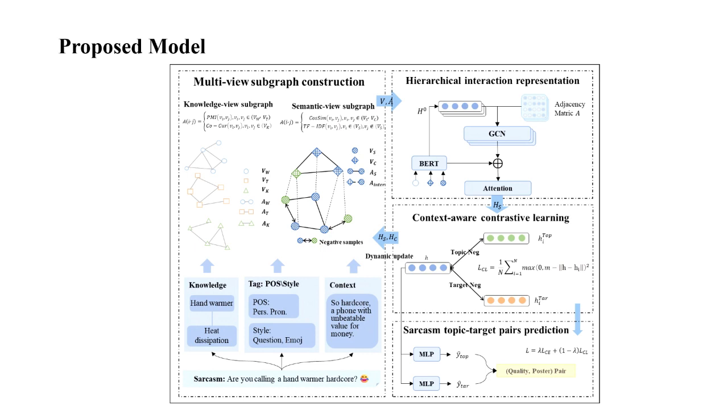To capture the global information of hybrid features, an attention-fused hierarchical aggregation mechanism is adopted to enhance the interaction representation of sarcasm. Then, the model designs a context-aware negative sampling strategy to perform contrastive training on samples of different target-topic pairs, which could learn to differentiate node representations.